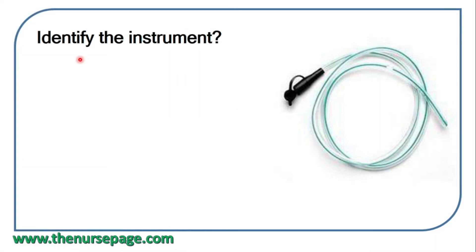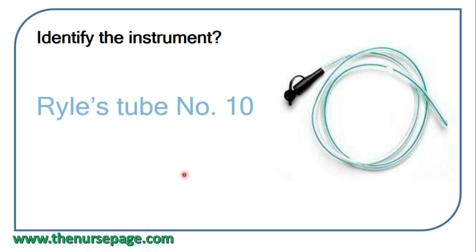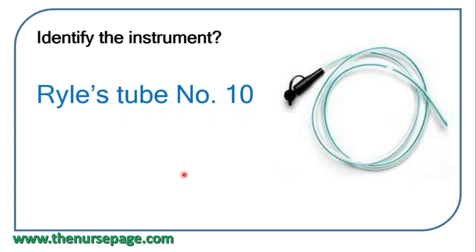Next question: identify the instrument and its size. The black color indicates size 10 French. So the size of this reyle's tube is number 10.